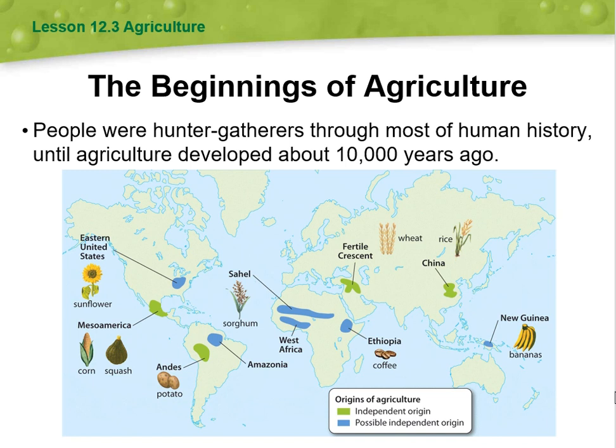For example, New Guinea with bananas is considered a possible independent origin. Ethiopia with coffee is another possible independent origin. China is an independent origin. The eastern United States, known for sunflower, is also categorized as a possible independent origin.